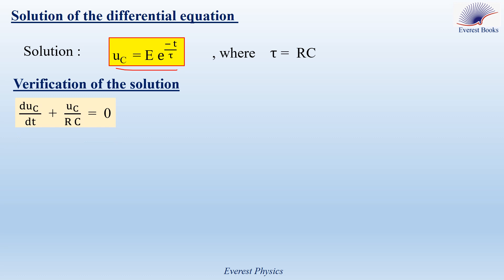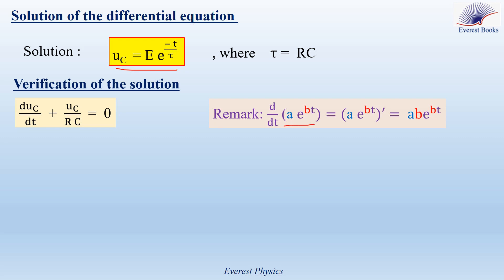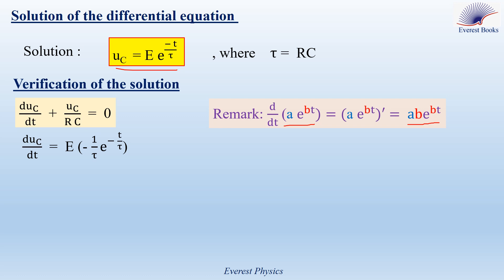Now we want to verify that this expression is a solution of the differential equation. Let's differentiate UC with respect to time. First, recall that the derivative of A·e^(Bt), where A and B are constants, is AB·e^(Bt). This means dUC/dt equals capital E, which is A, times minus 1 over tau, which is B, times e to the power minus t over tau. So dUC/dt equals minus E over tau times e^(-t/tau). Now we replace dUC/dt and UC in the differential equation by these expressions.